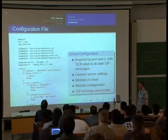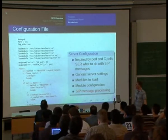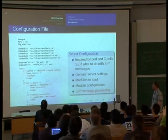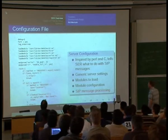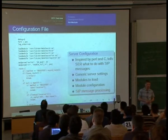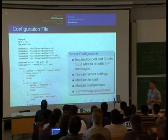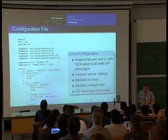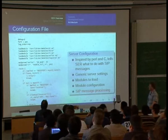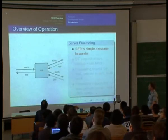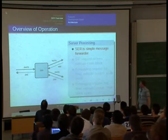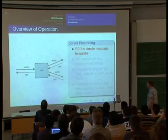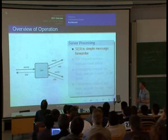When SER receives a SIP message it starts executing the routing section, executing one command after another until it hits the end of the section or a break. From this section you can change the content of messages, change headers, send a reply, forward the request, and maintain internal state. This configuration example shows only one route section but there are more types. SER is a very simple message forwarder — it can receive a SIP request, forward it, or generate a reply. When SER receives a request — for example, an INVITE — it will start executing the main route section described in the configuration file.